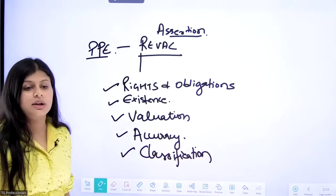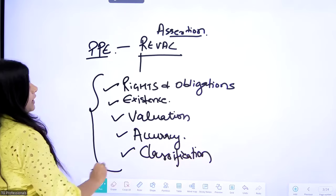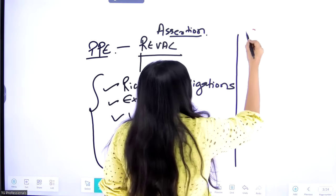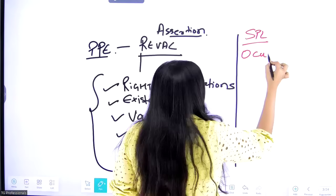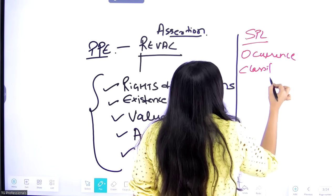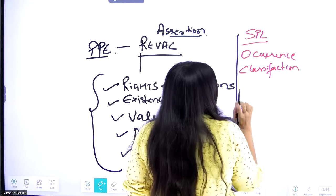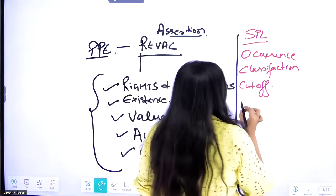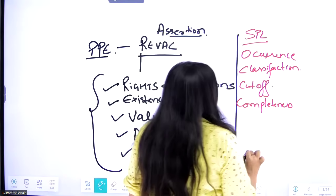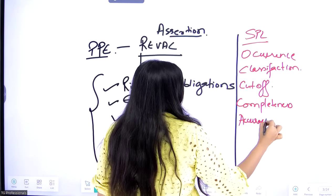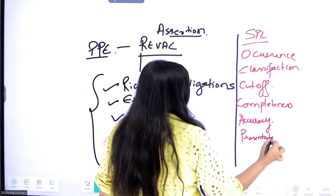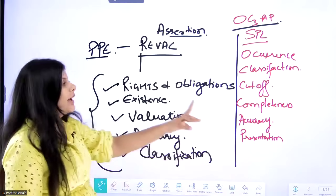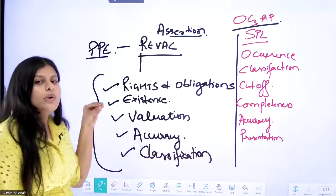For the Statement of Profit and Loss, you check OCCA assertions: Occurrence, Classification, Cutoff (recorded in the correct accounting period), Completeness (all costs recorded, nothing omitted), and Accuracy. So for P&L items, check OCCA; for assets and liabilities, check REVAP. To verify these assertions you perform work — and on PPE, for example, to check existence you do a physical inspection of the equipment.